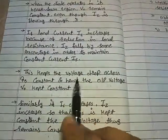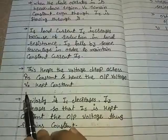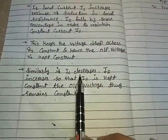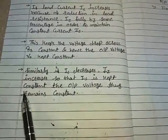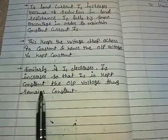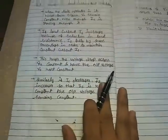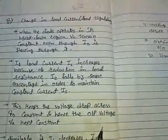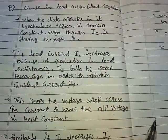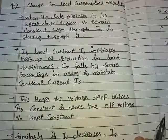This keeps the voltage drop across RS constant and hence the output voltage V0 is kept constant. Similarly, if IL decreases, IZ increases so that IS is kept constant and the output voltage remains constant. In this manner we saw that a zener diode is able to provide good line and load regulation when used as a voltage regulator.